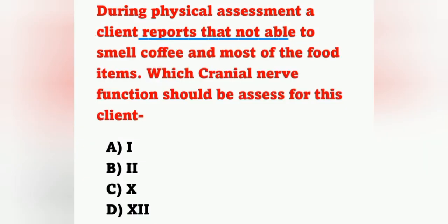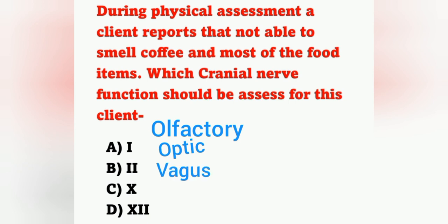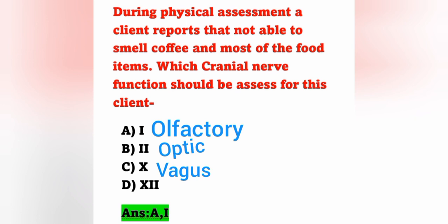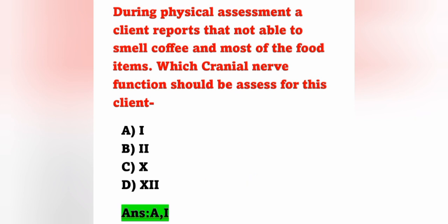Next question: During physical assessment, a client reports not being able to smell coffee and most food items. Which cranial nerve function should be assessed? Options: option A, cranial nerve 1; option B, cranial nerve 2; option C, cranial nerve 10; option D, cranial nerve 12. Cranial nerve 1 is the olfactory nerve and its function is the sense of smell. So the answer is option A, the first cranial nerve. Cranial nerve 2 is the optic nerve, cranial nerve 10 is the vagus nerve, and cranial nerve 12 is the hypoglossal nerve.